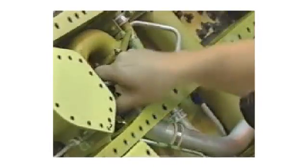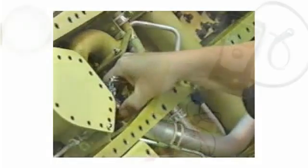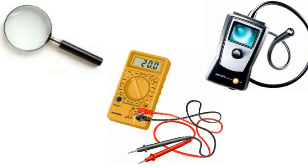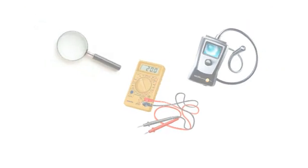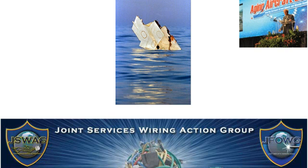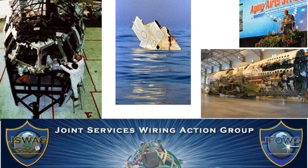Finding problems on the ground requires diligence, vigilance, a flashlight, and an inspection mirror. You may even need a magnifying glass, a multimeter, or perhaps more sophisticated tools. Wiring inspection has taken on greater importance in the past decade, as aging aircraft and several fatal accidents have been attributed to wiring systems.